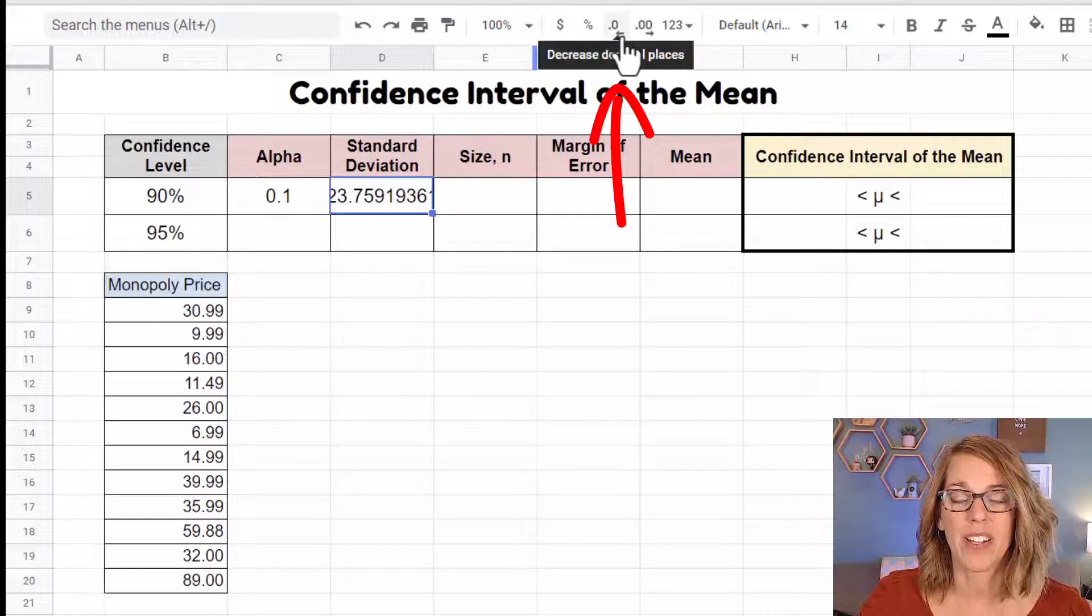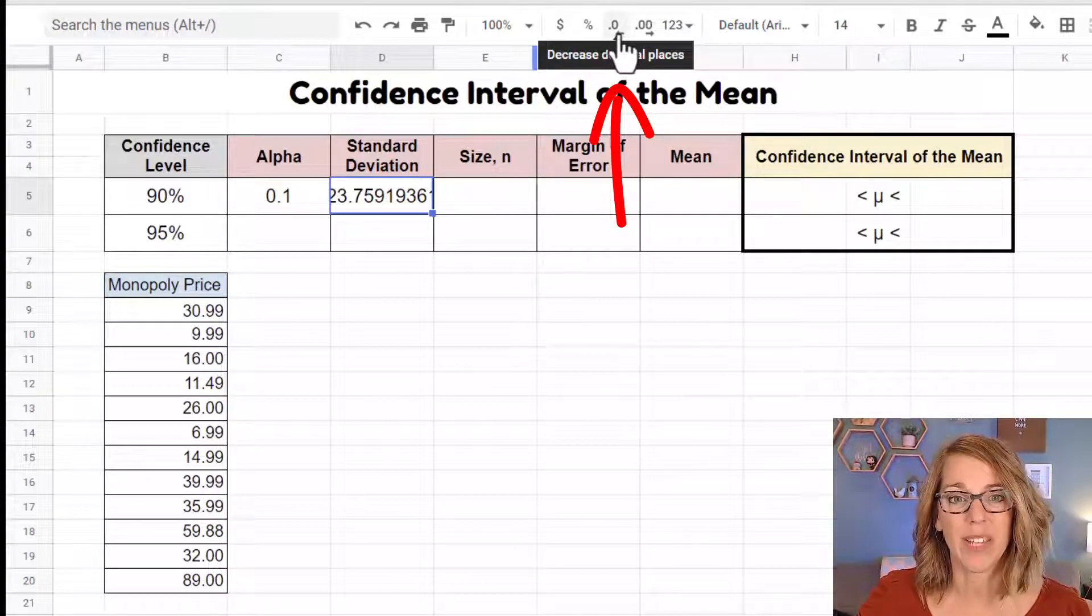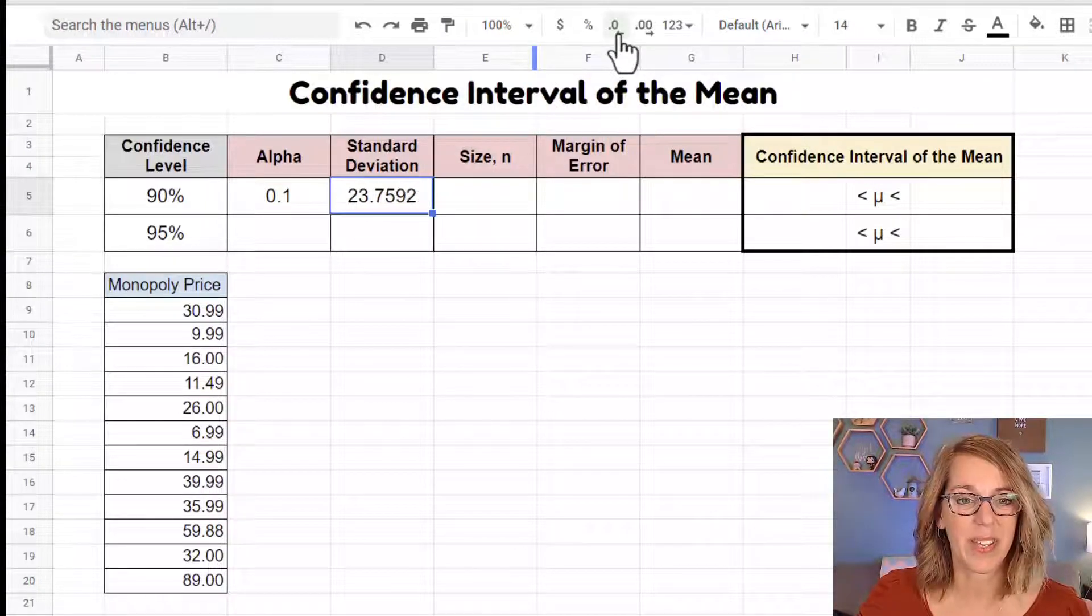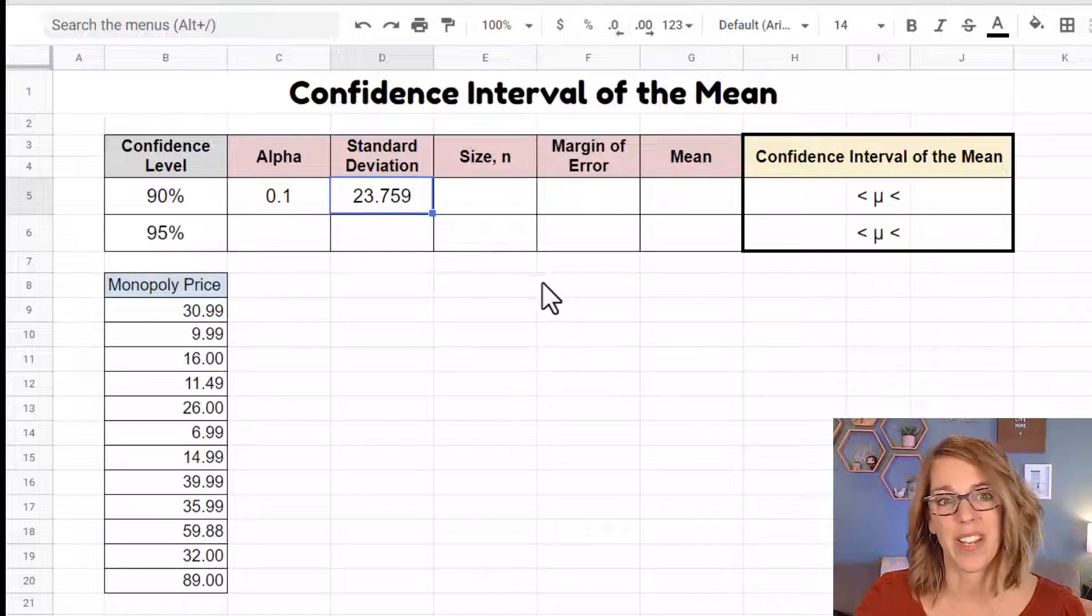Let's go ahead and round this one. I'm going to decrease my decimal places using this key up here and I'll just do it to three decimal places.